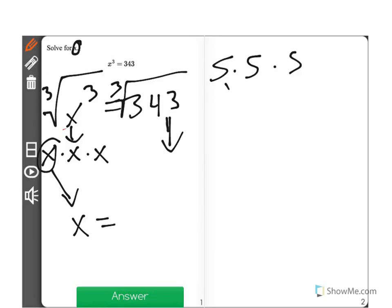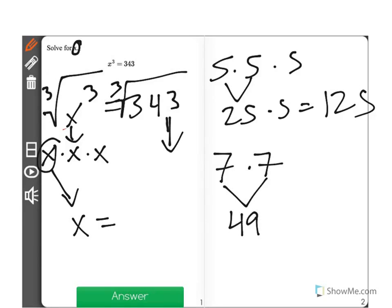5 times 5 times 5, well, that's 25 times 5, which is 125. Not enough, and it's actually not even close to 343. I'm going to move up to 7. 7 times 7 is 49, times another 7 will actually equal 343.